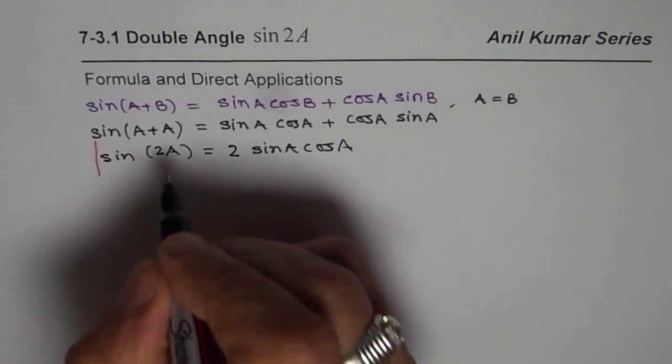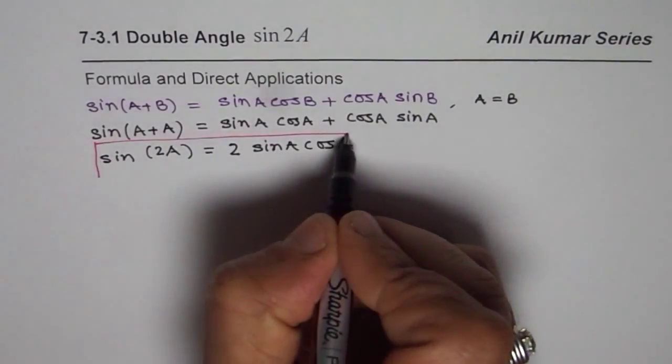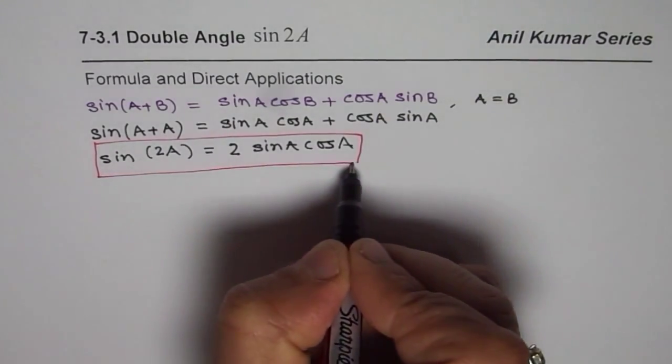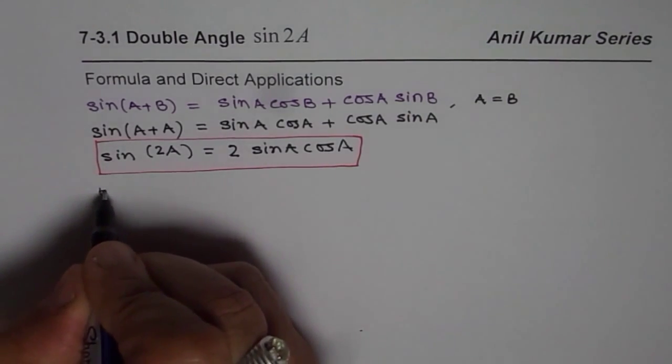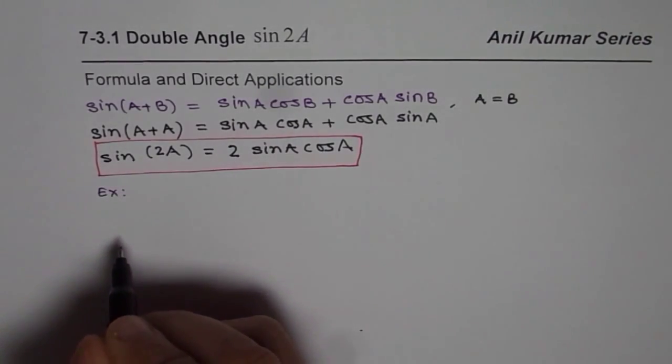Now as most of my students have been wondering about, there are not too many things which you have to remember. If you know the basic compound angle formula, you can always find the others within a minute's time, just as we did here. Now based on this formula, you will have many examples in the book. Some of them could be: